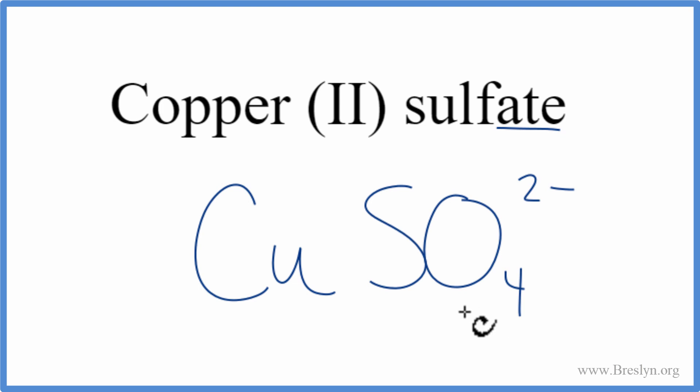We have a metal and nonmetals, we have an ionic compound, and we need to think about the charges on the copper, and then we know the sulfate is 2-.